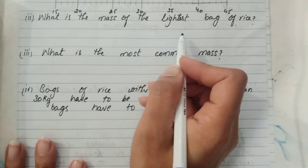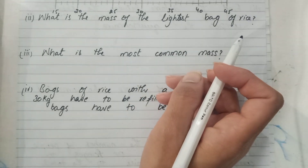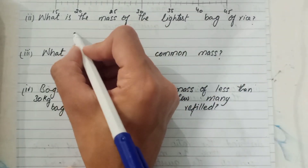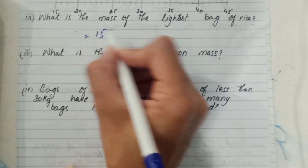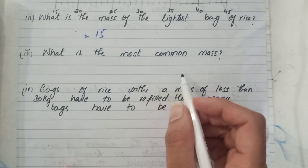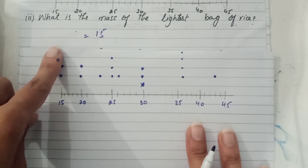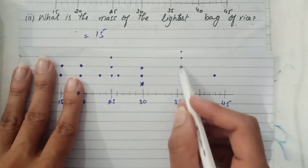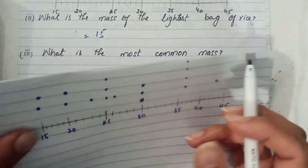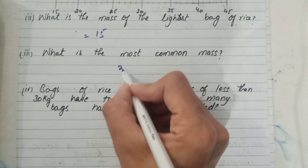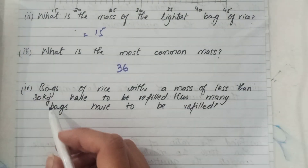Part two: what is the mass of the lightest bag of rice? We can observe from the dot diagram that it is 15 — the lightest mass of the bag is 15. Part three: what is the most common mass? We can observe from the dot diagram that the most common mass is 36.